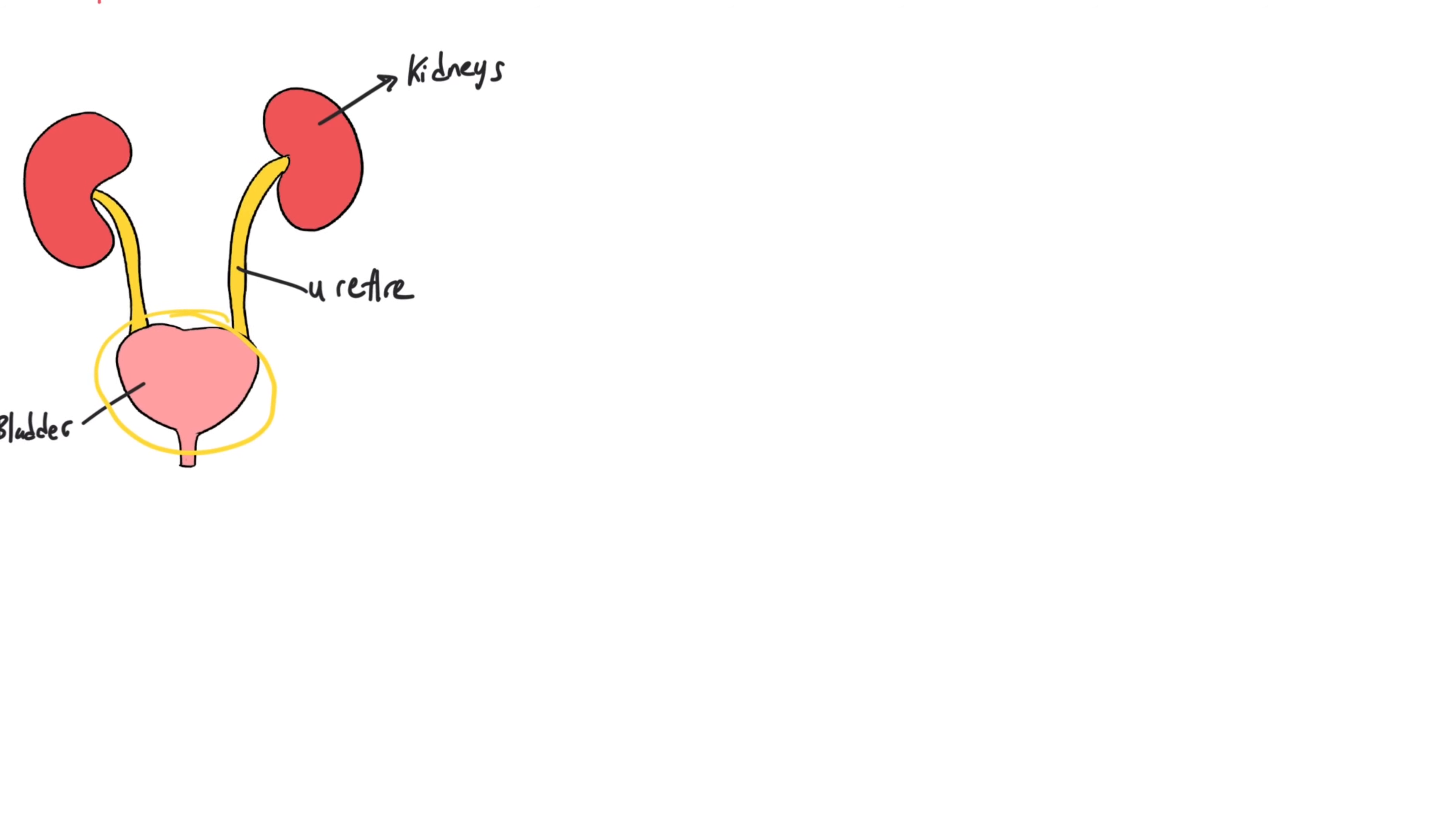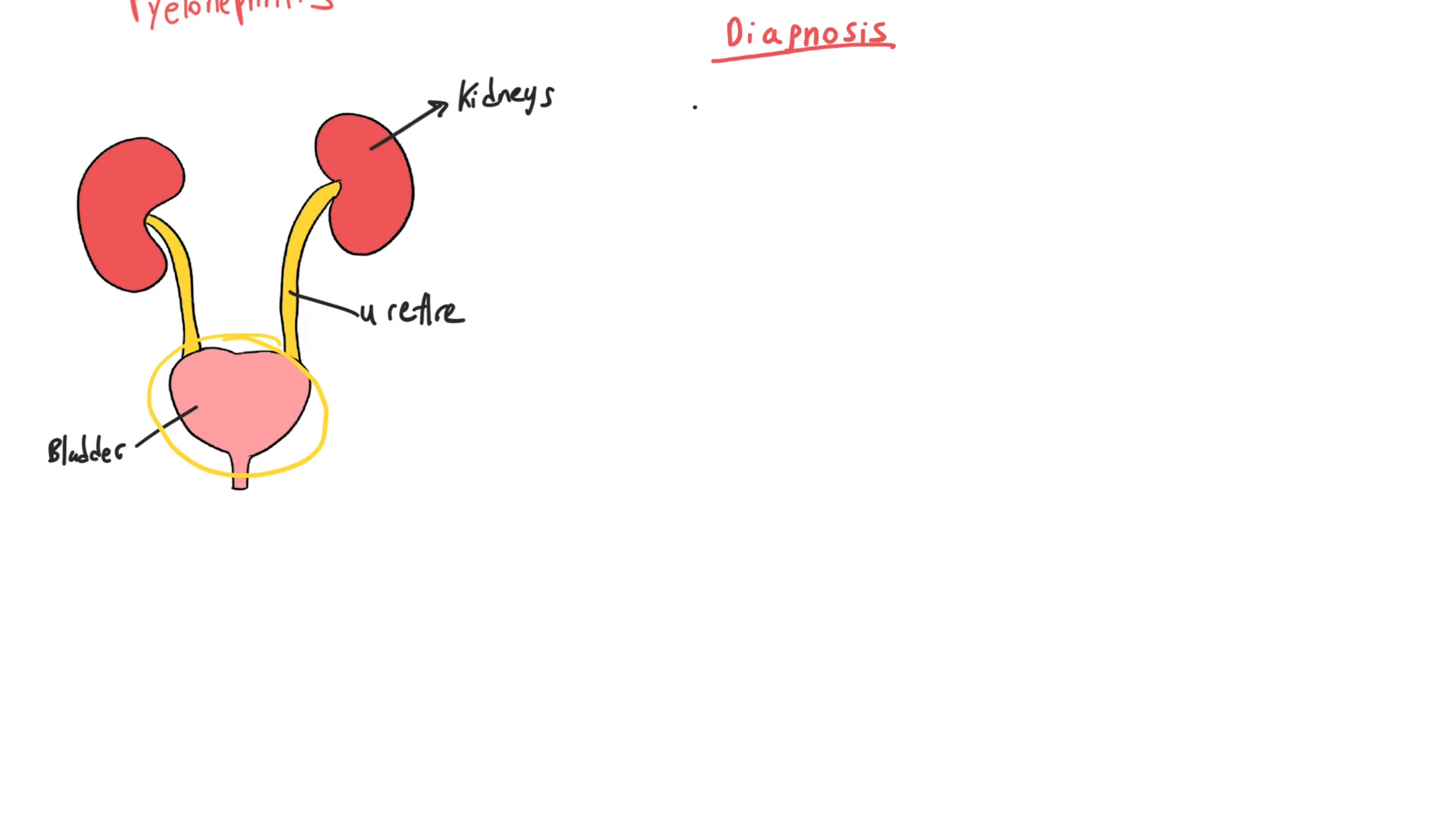Let's go to the diagnosis. You want to take a good history and obviously rule out any red flags. The first thing you want to do is a urine dipstick, look for any presence of nitrate or leukocyte. It's important to note, if it's negative for nitrate but positive for leukocyte, always send an MSU, which is basically send it for urine culture. UTI is less common in males, it's more rare. If a man presents with UTI, always culture the urine.